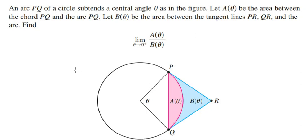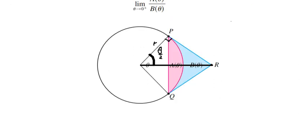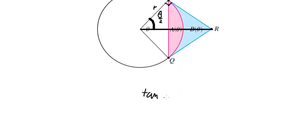Hello everybody. Today I want to show you how to find the limit. The first thing we need to do is divide this one. The angle here is about theta over 2. This is about a tangent, so we have 90 degrees here. We want to find the shaded area, so we need to minus the white triangle and the pink area. We can use tan(theta/2) for this.